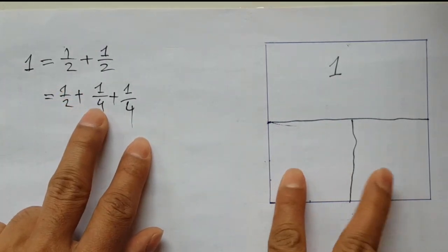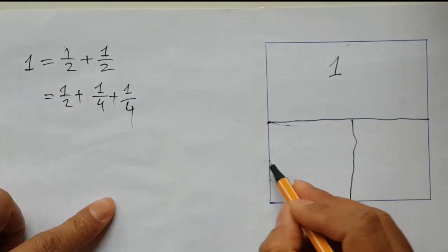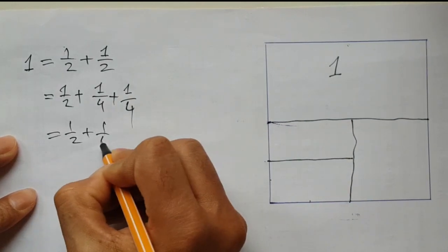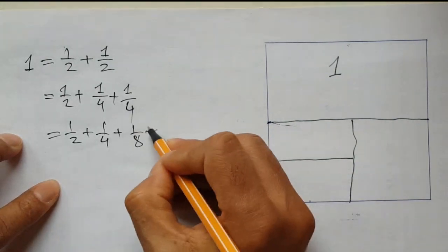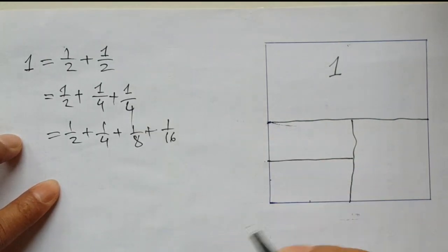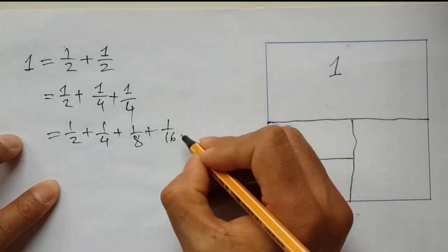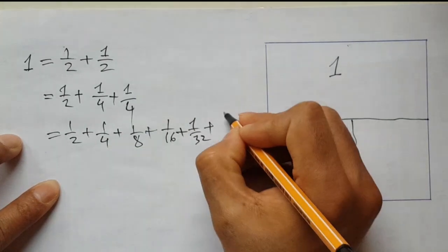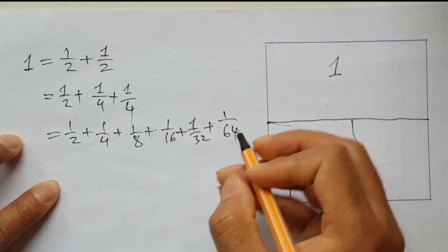Each time if I cut half of the next surface, it will give a series like 1/8 + 1/16 + 1/32 + 1/64 and so on.